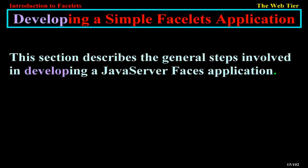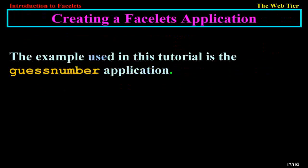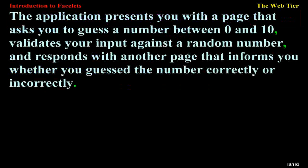Developing a simple Facelets application. This section describes the general steps involved in developing a JavaServer Faces application. The following tasks are usually required: developing the backing beans, creating the pages using the component tags, defining page navigation, mapping the Faces servlet instance, and adding managed bean declarations. The example used in this tutorial is the guess number application, which presents you with a page asking you to guess a number between 0 and 10, validates your input against a random number, and responds with another page informing you whether you guessed correctly or incorrectly.